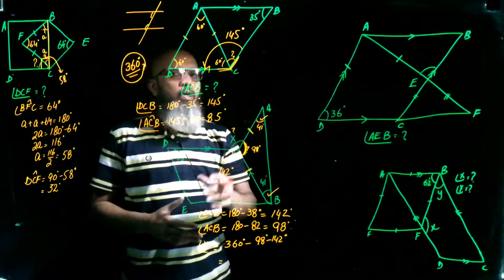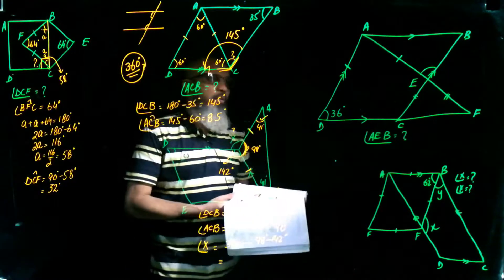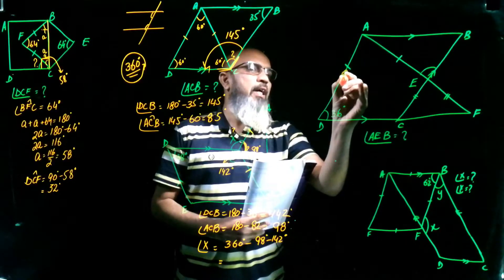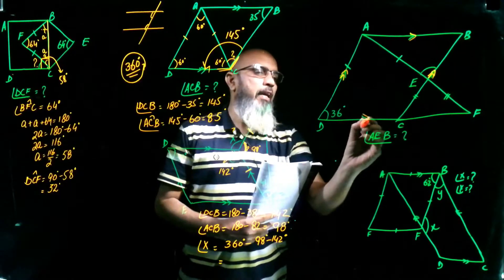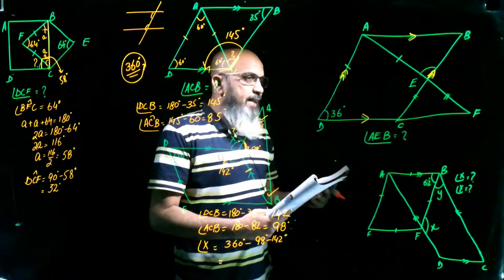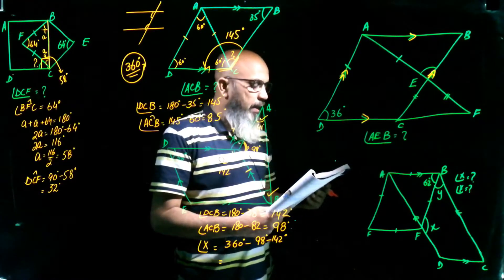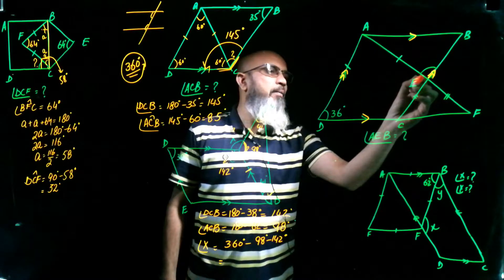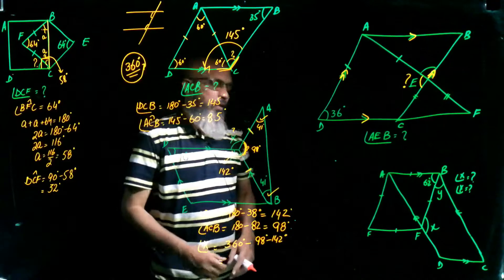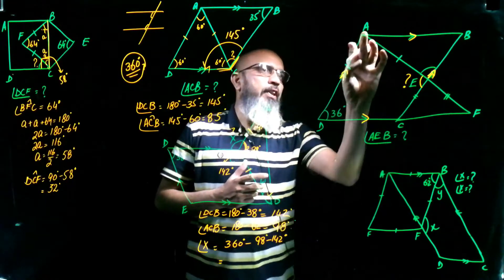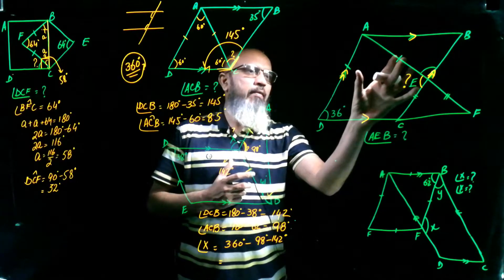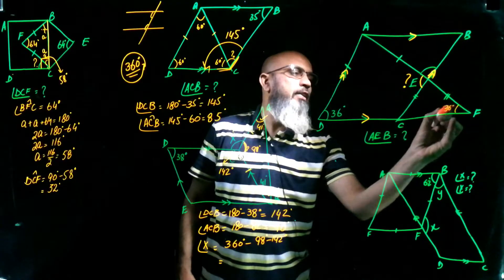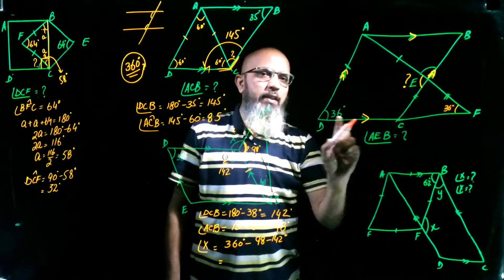The fourth question: ABCD is a parallelogram and ECF is an isosceles triangle. ADF is also given as an isosceles triangle with angle 36 degrees. Since ADF is isosceles, both base angles equal 36 degrees. Similarly, ECF is isosceles with both base angles equal to 36 degrees.